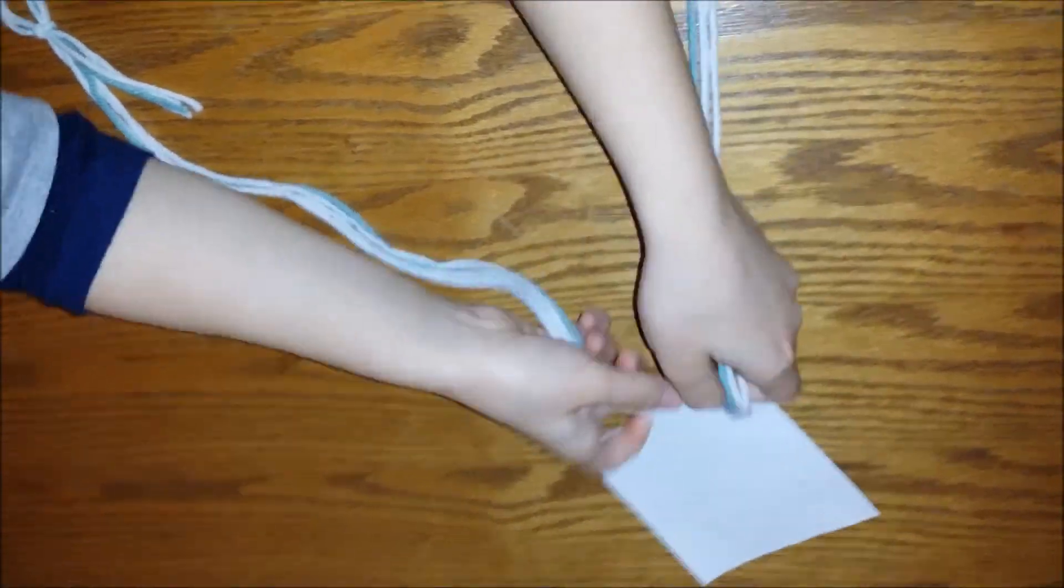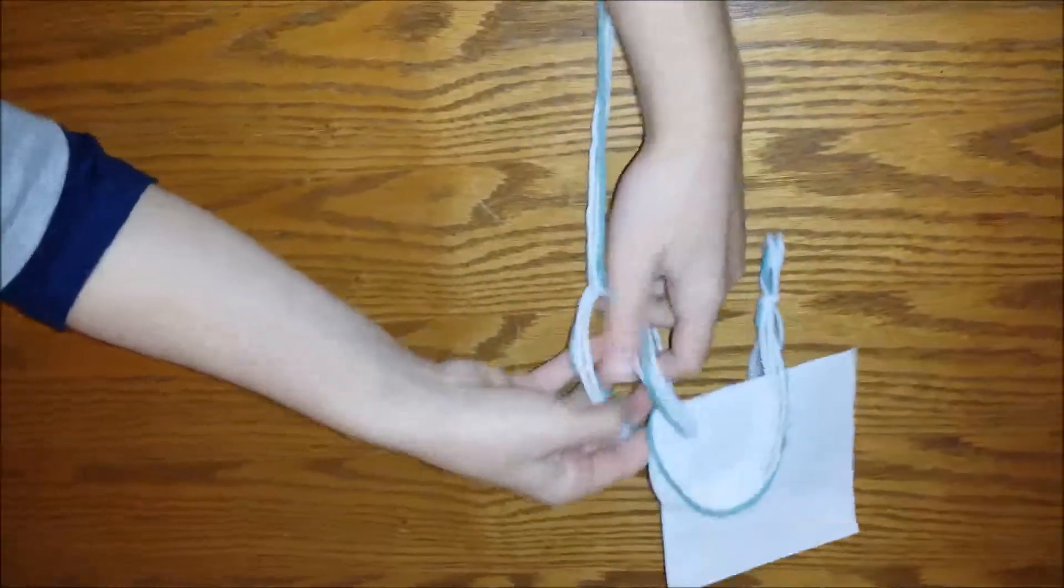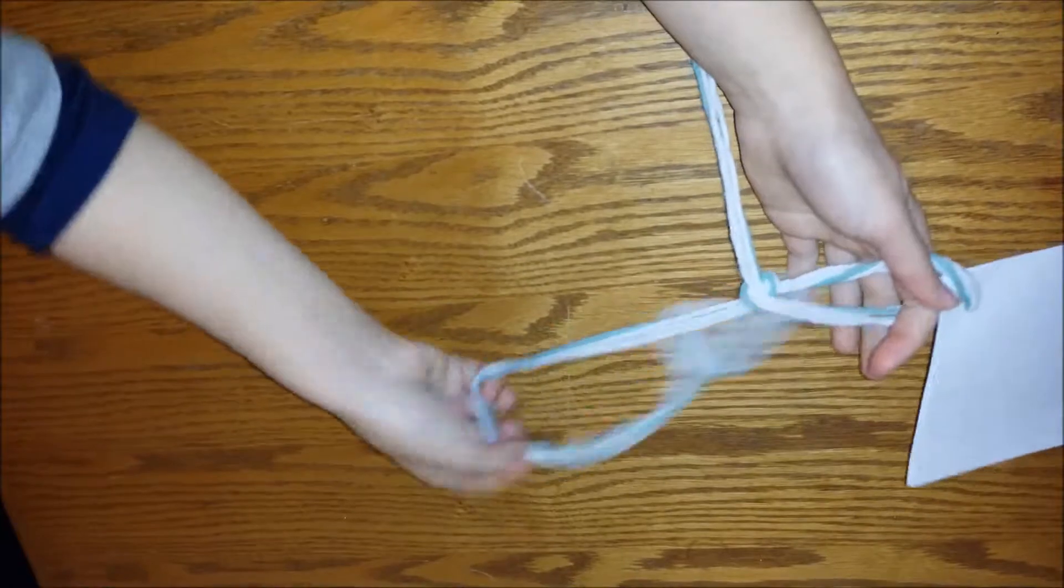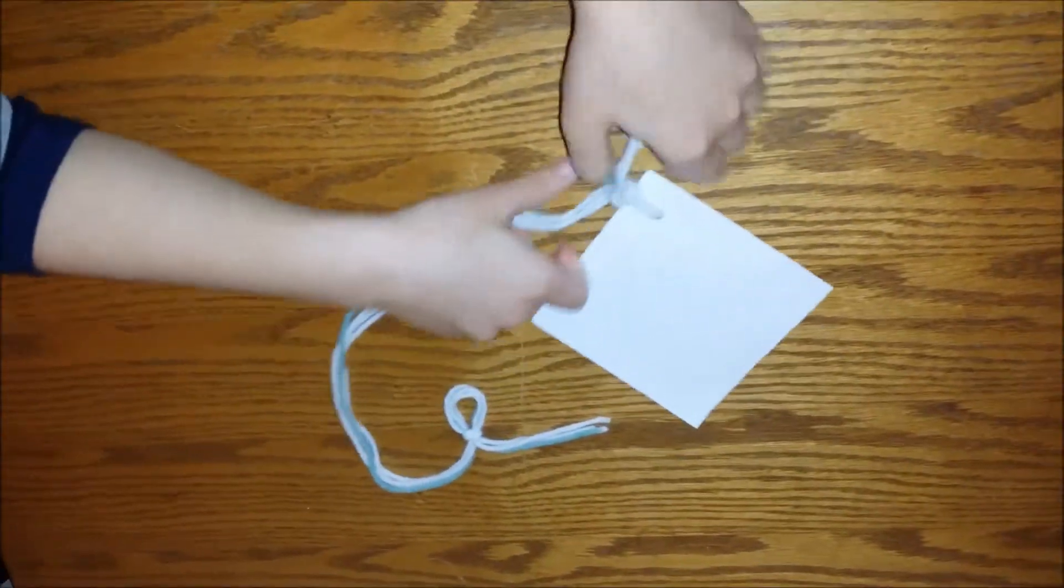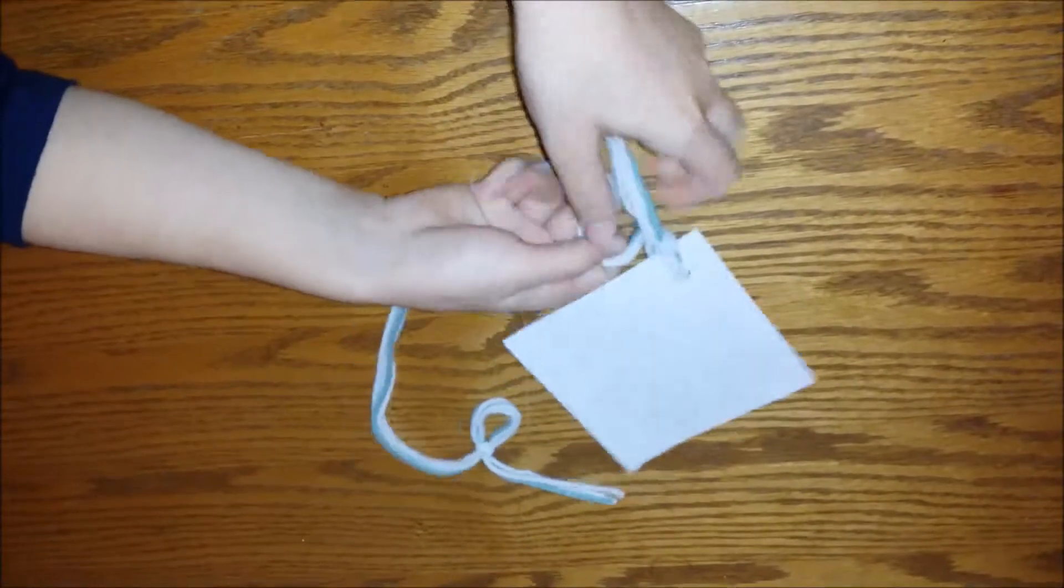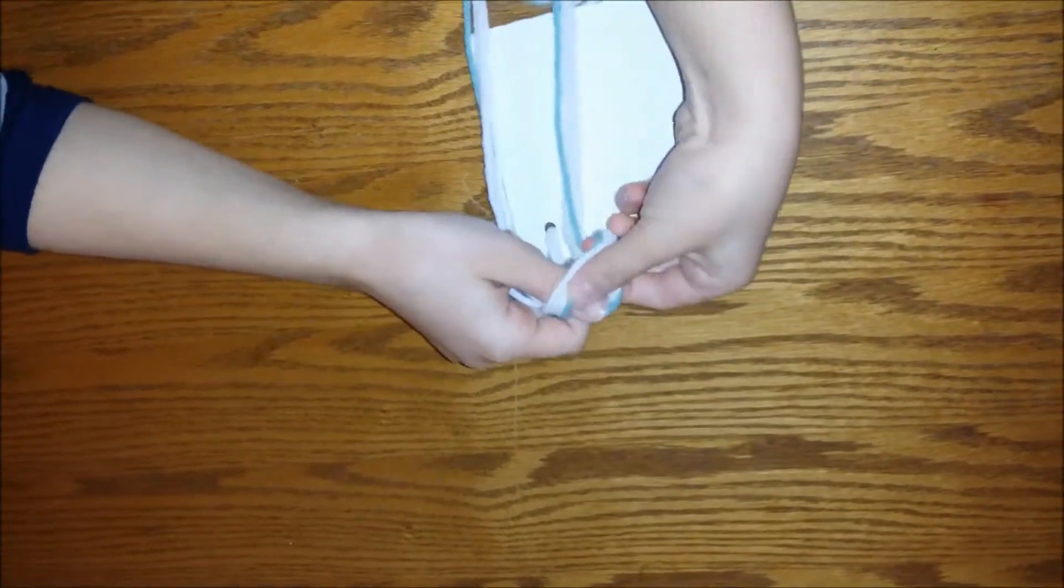These two sides. So then you have to make a knot, actually a double knot. You make one knot, I'll make it go fast motion, two knots. Okay, so it's done.